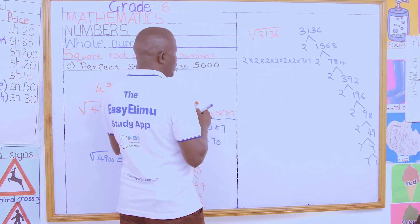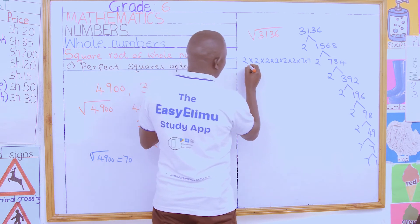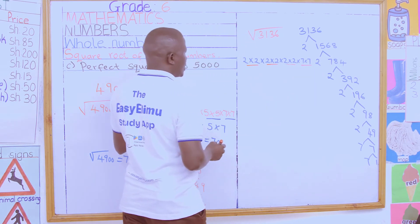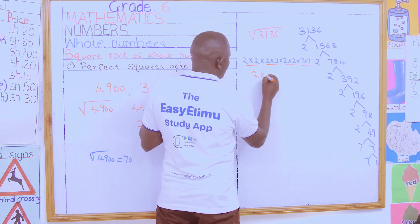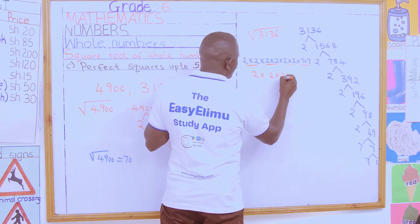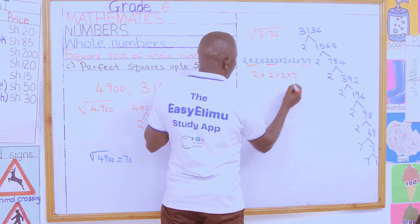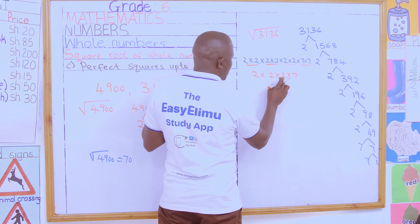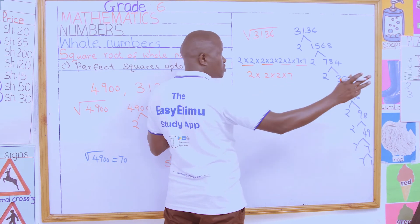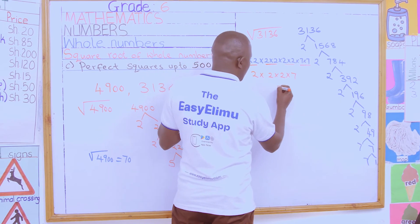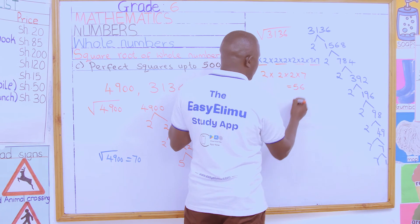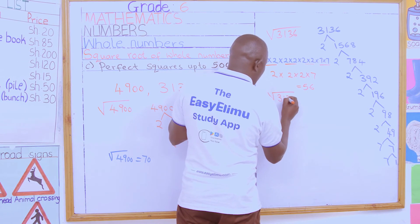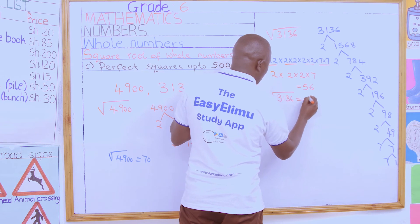Now let us pair our factors. We pair this, we pair this, we pair this, and we pair this. In each pair, let us pick one: we pick two, multiplied by two, multiplied by two, multiplied by seven. Two multiplied by two is 4, four multiplied by two is 8, eight multiplied by seven — you can use the multiplication table to get 56. So the square root of 3,136 equals 56.